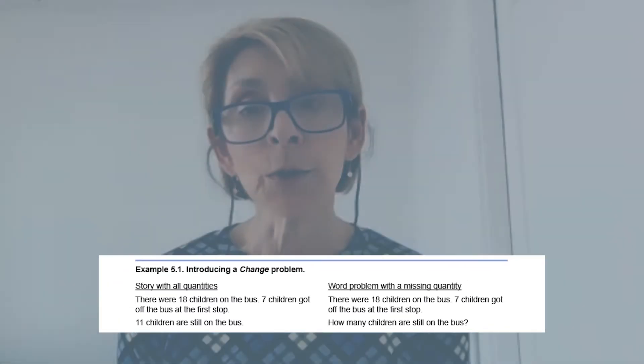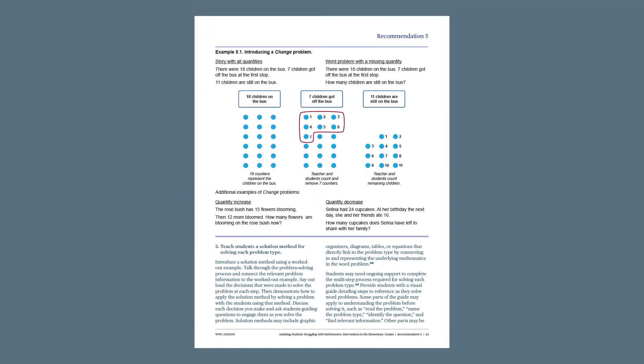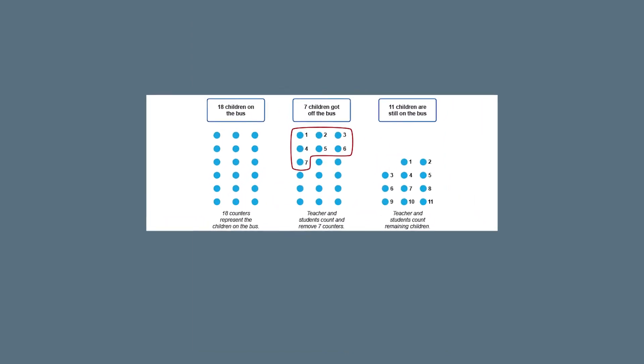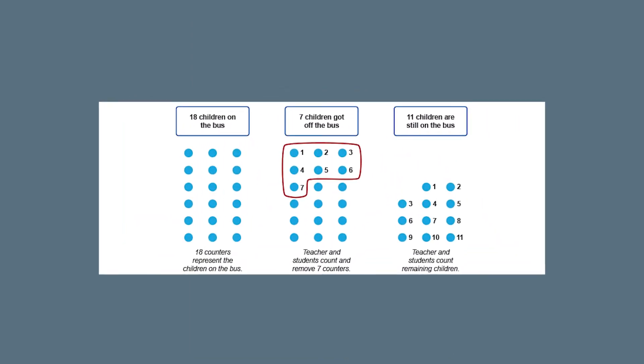Next, the teacher presents a word problem where the story is the same but there is a missing number. As the teacher and students discuss the problem type with the story and with the word problem, the teacher uses role-playing, gestures, and concrete or semi-concrete manipulatives to help students visualize how the quantities relate to each other and what the mathematics event means. The teacher shows students other examples of the problem type using different scenarios and numbers, so they see how the problem type stays the same even as scenarios and quantities change.